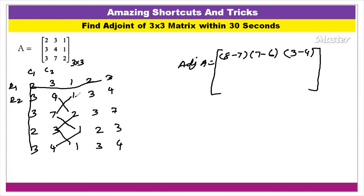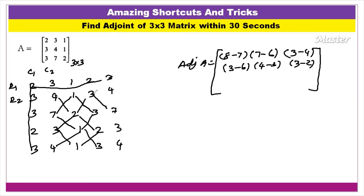Next, column-wise: column 1 — 3 times 3 is 9, 2 times 3 is 6. So 3 minus 6. Next: 2 times 2 is 4, 1 times 3 is 3. So 4 minus 3. Next: 1 times 3 is 3, 1 times 2 is 2. So 3 minus 2. Then: 3 times 7 is 21, minus 3 times 4 is 12. Then: 3 times 3 is 9, 7 times 2 is 14. So 9 minus 14. Then: 2 times 4 is 8, 3 times 3 is 9. So 8 minus 9.